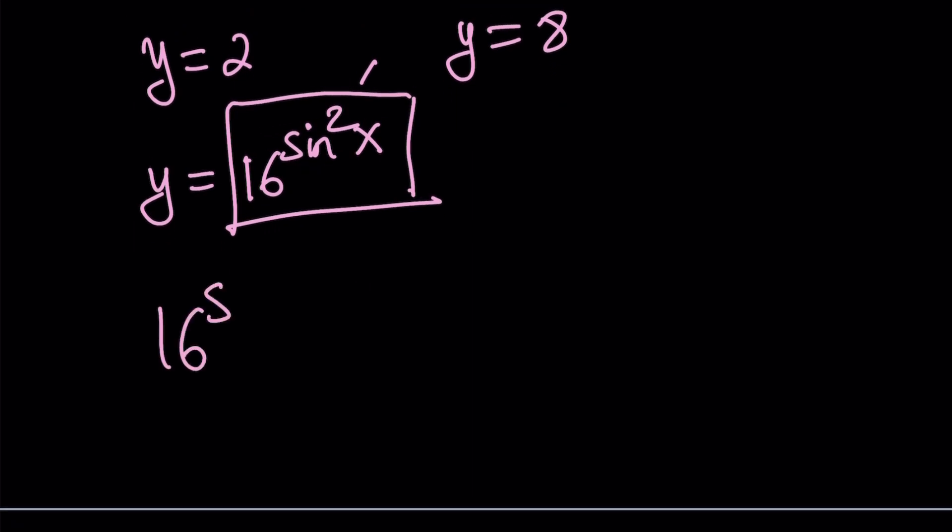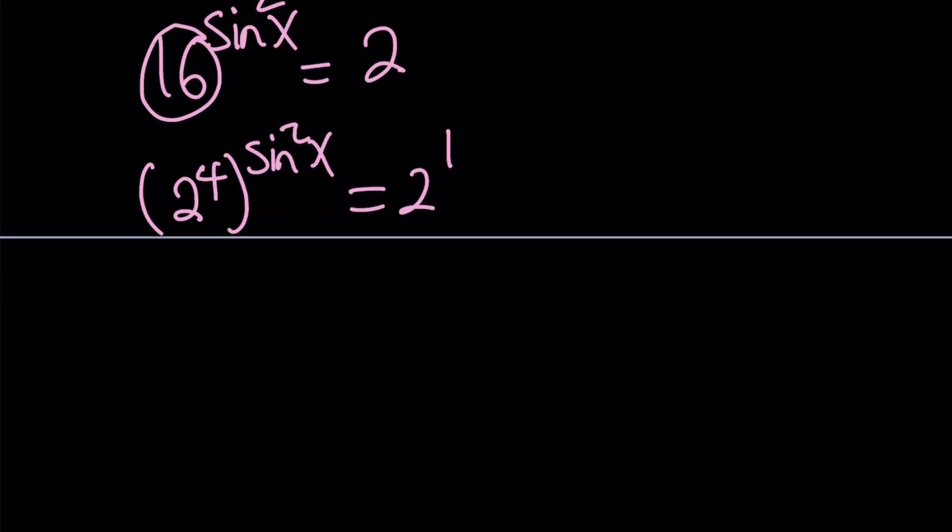So if this is equal to 2, 2 can be written in so many ways. But let's manipulate 16. 16 is 2 to the 4th power. This is 2 to the power of 1. From here we get 4 sine squared x equals 1, and sine squared x equals 1/4.